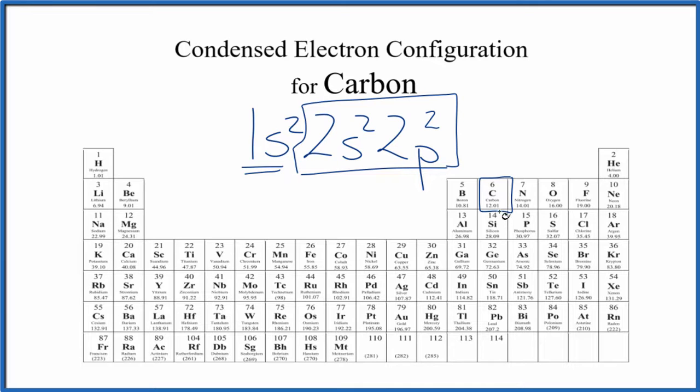That means it has six protons, but since all these elements are neutral, it'll have six electrons. And if you count these up, two plus two plus two, that gives us the six.